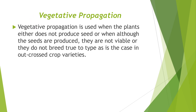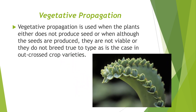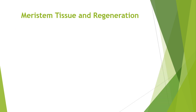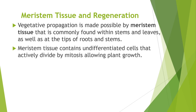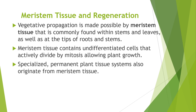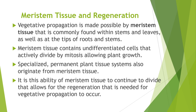Vegetative propagation is used when plants either do not produce seed, or when seeds are produced but are not viable or do not breed true to type, as is the case in outcrossed crop varieties. Vegetative propagation is made possible by meristem tissue commonly found within stems and leaves, as well as at the tips of roots and stems. Meristem tissue contains undifferentiated cells that actively divide by mitosis, allowing plant growth. Specialized permanent plant tissue systems also originate from meristem tissue, and it is this ability to continue dividing that allows for the regeneration needed for vegetative propagation to occur.